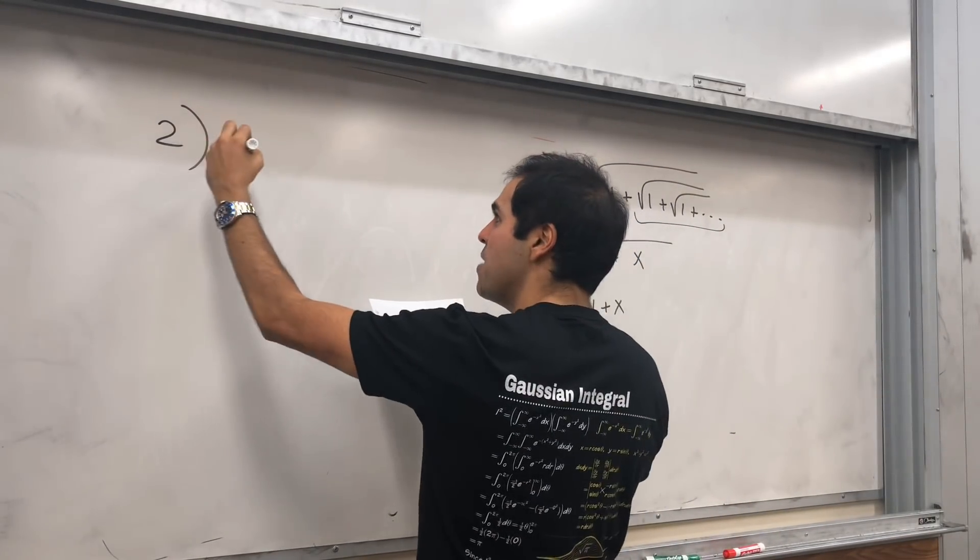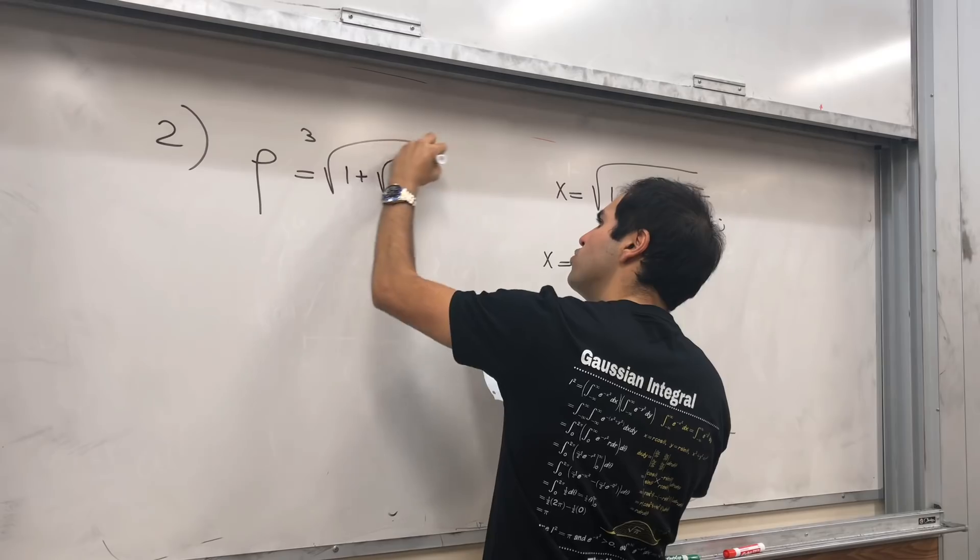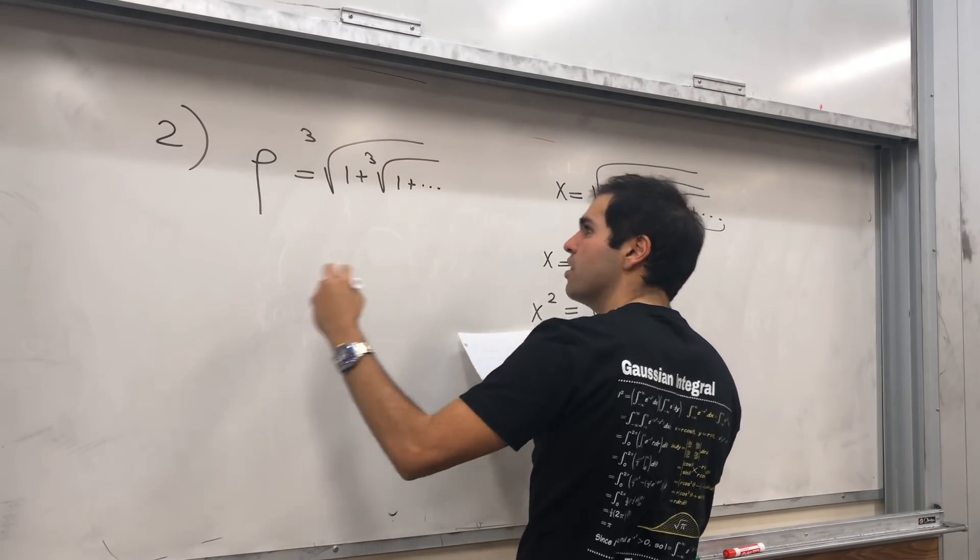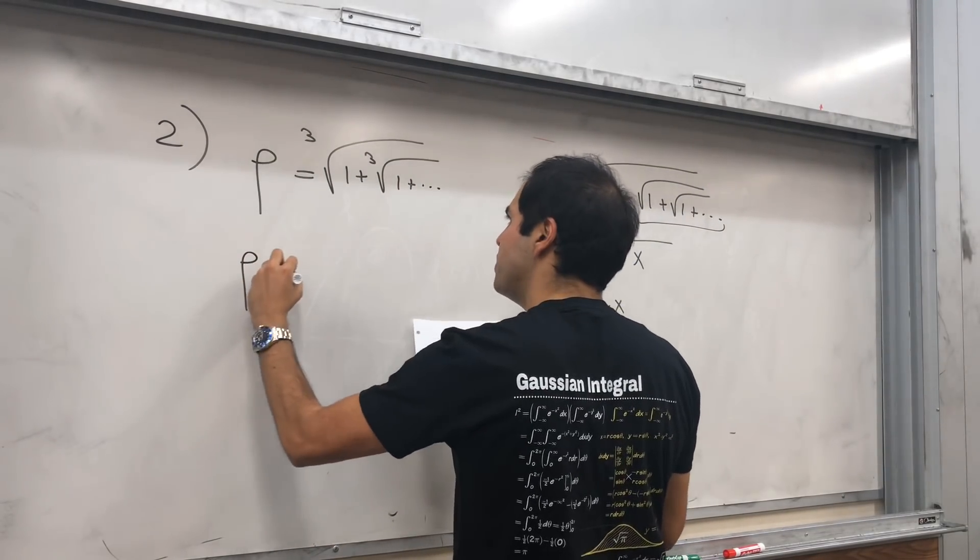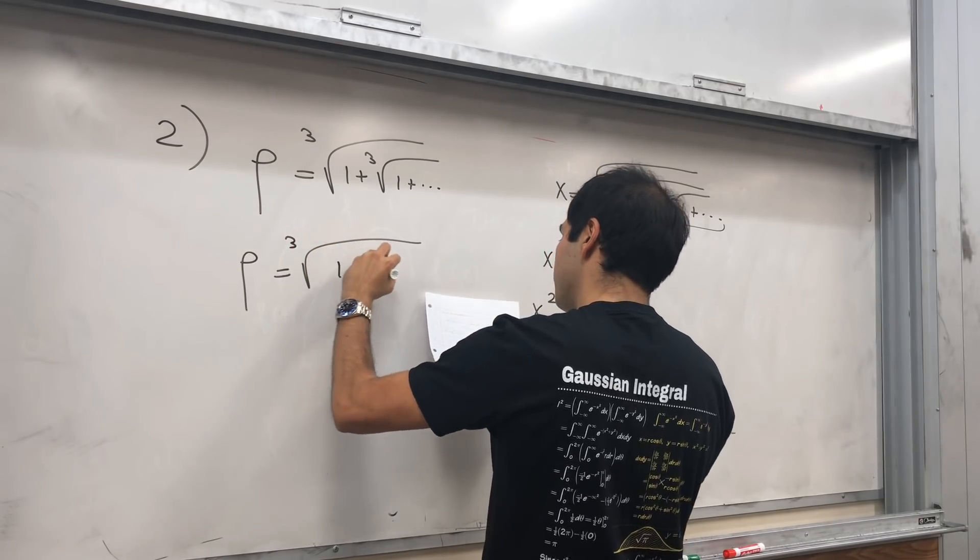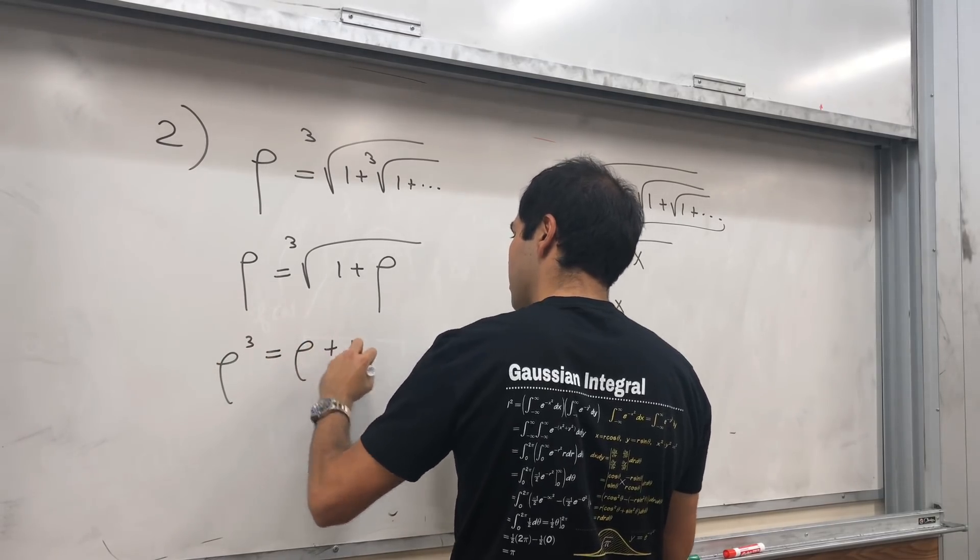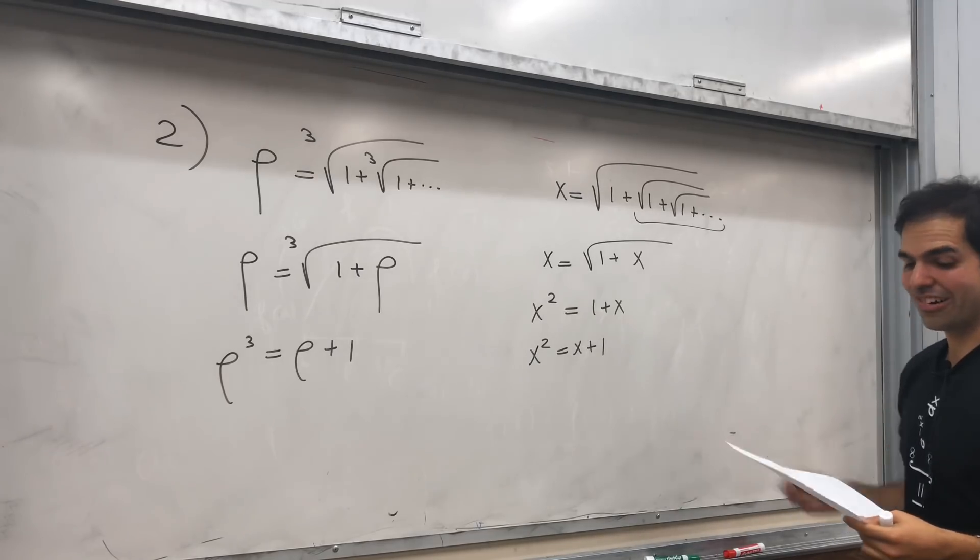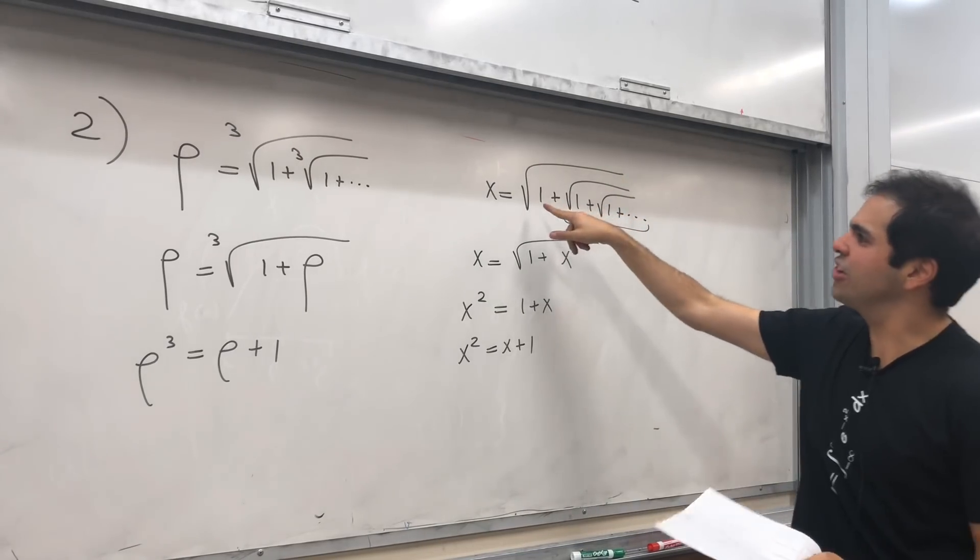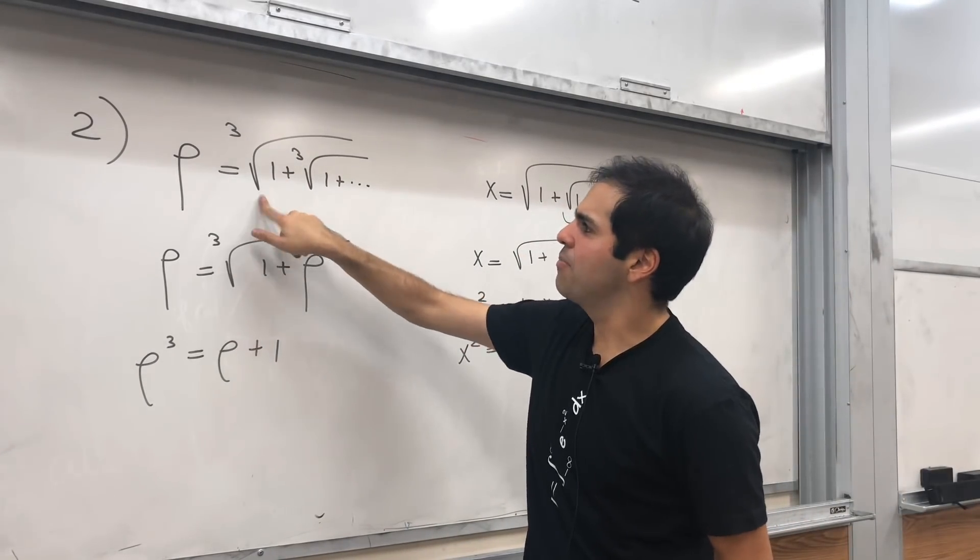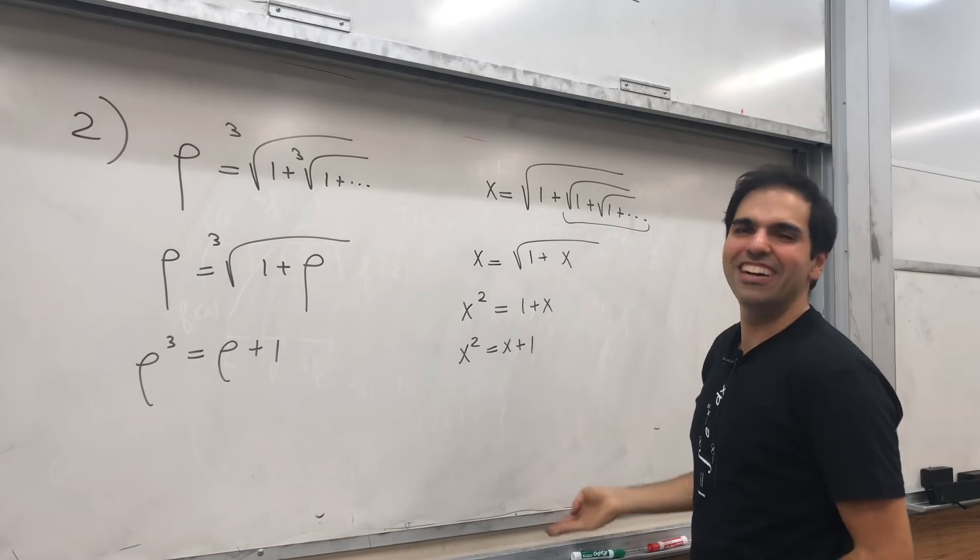Now for the plastic numbers, I'm claiming that it's a similar thing. Rho equals cube root of 1 plus cube root of 1 plus dot dot dot. And the reason is, if you ignore that, you still get rho. So rho would be the cube root of 1 plus rho. And so if you want, rho cubed equals rho plus 1, which is exactly the plastic number equation that we have. So as I said, it's a new generalization where for the golden ratio you have square root, for the plastic numbers you have cube root.